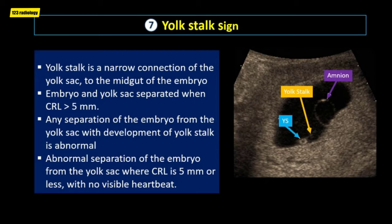The yolk stalk sign: normally, the yolk stalk is a narrow connection of the yolk sac to the midgut of the embryo, best seen when the embryo and yolk sac become separated, which does not occur until the crown rump length is greater than 5 mm. Early in pregnancy, the embryo normally wears the yolk sac like a small backpack. A yolk stalk sign is abnormal separation of the embryo from the yolk sac in early embryonic development, specifically where crown rump length is 5 mm or less, with no visible heartbeat.